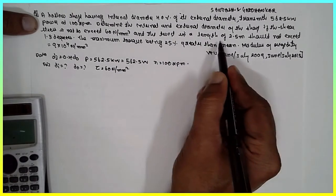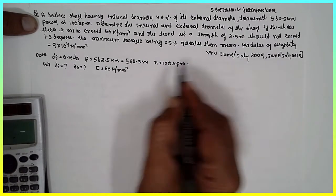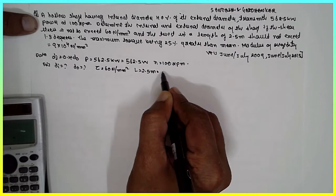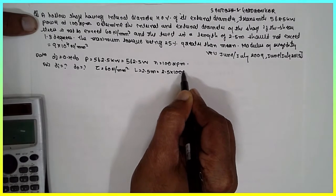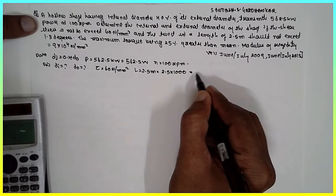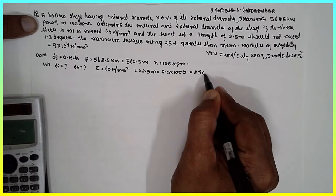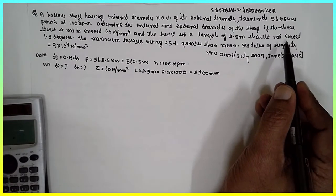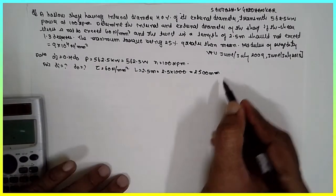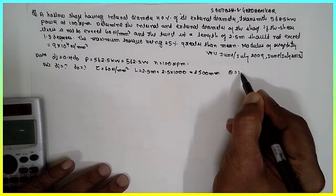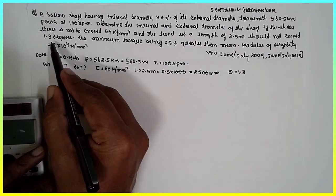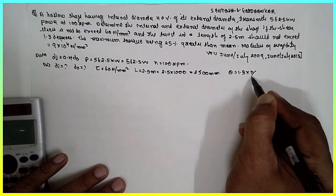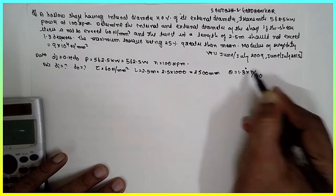The twist in a length of 2.5 meters — converted to 2500 mm — should not exceed 1.3 degrees. Convert degrees to radians by multiplying by π/180.